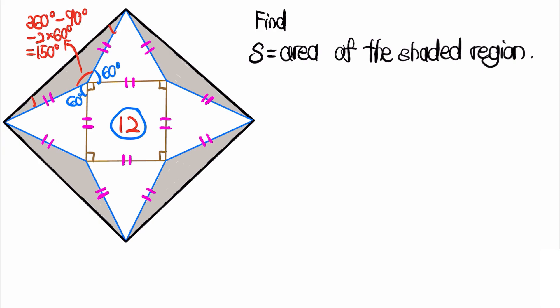That gives us 150 degrees. Since the triangle over here is an isosceles triangle, one of the angles here is equal to (180 minus 150) divided by 2, which is 15 degrees. Similarly, since the four shaded isosceles triangles are all congruent to each other, this angle is also 15 degrees. Therefore one corner is altogether 60 plus 15 plus 15 degrees, which is 90 degrees — a right angle.